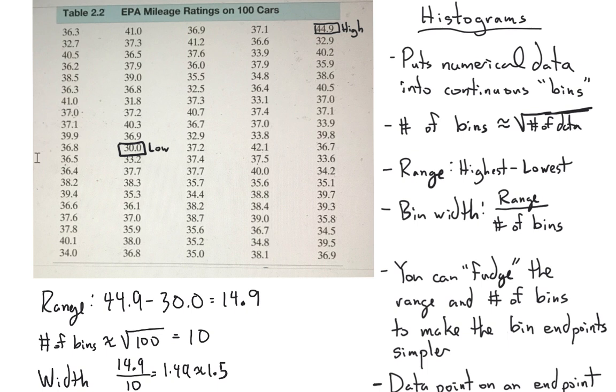That's okay, we can have bin widths of 1.5. So the first bin would be all cars that have a gas mileage between 30 and 31.5, the second bin would be between 31.5 and 33. But I think for this purpose, just because it might be easier to go with whole numbers as the bins, I'm going to fudge this quite a bit. I'm going to start at 30 and go up to 45.